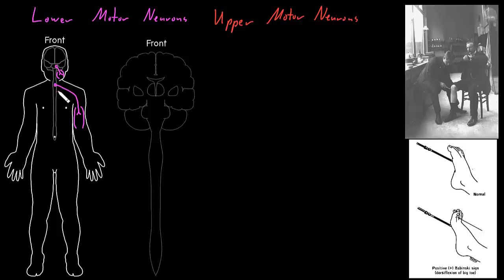Now we're going to talk about upper motor neurons, because while the lower motor neurons are controlling the skeletal muscle cells and telling them when to contract, upper motor neurons are the ones controlling the lower motor neurons and their activity. The somas of the upper motor neurons are found mainly up in the cerebral cortex, on that outside surface of the cerebrum, and their axons descend down to synapse on lower motor neurons in the brain stem or in the spinal cord. Information flows from the cerebral cortex down these axons to the lower motor neuron somas, and then out the axons of the lower motor neurons to actually reach the skeletal muscle cells.